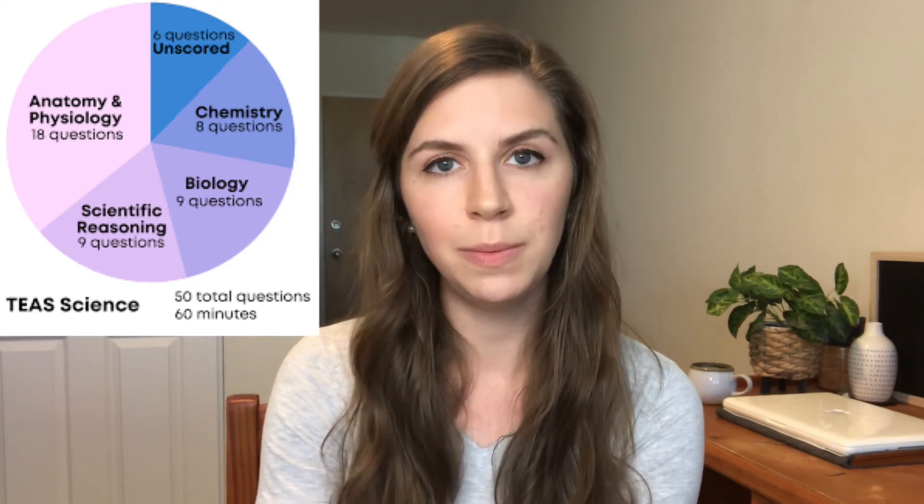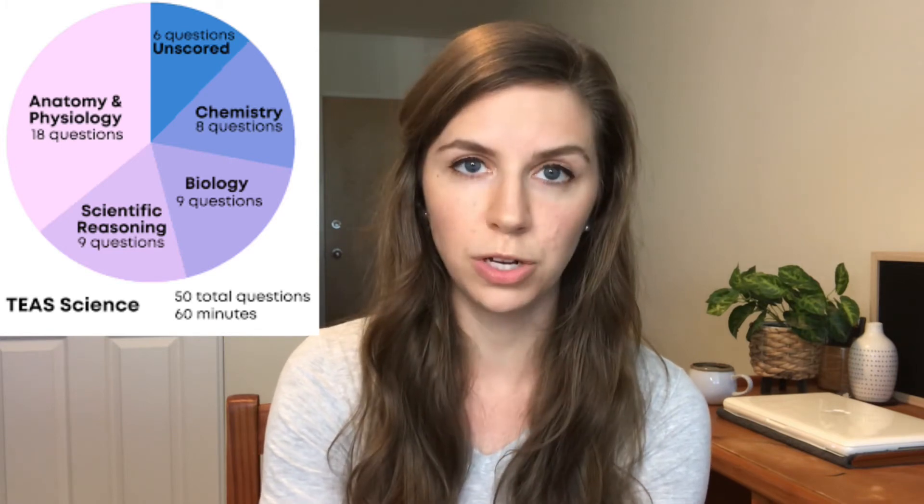Content-wise, there have also been the most major changes in the science section. On the TEAS 6, the science section questions were broken down into anatomy and physiology, life and physical sciences, and scientific reasoning. On the TEAS 7, they still have the anatomy and physiology questions as well as scientific reasoning questions, but there are no more life and physical science questions — instead, there are going to be biology and chemistry questions. That is where the majority of the changes have taken place for the science section.